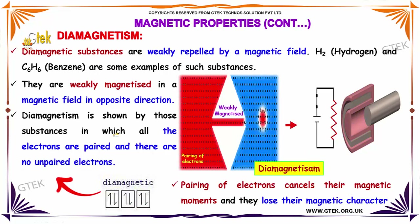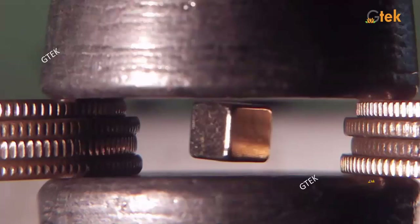I am taking the bismuth metal and placing it in the magnetic field to show you how diamagnetization works.